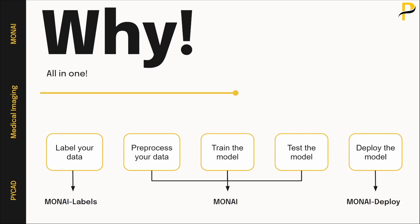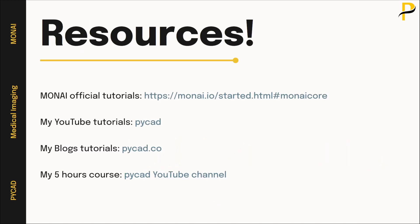Why should we use MONAI? It is all-in-one. There is a sub-module called MONAI Label that can be used for labeling your data. Then there is base MONAI, which is used for pre-processing, post-processing, training, and testing your models. There is also another sub-module called MONAI Deploy that can be used to deploy your models on the NVIDIA Clara server. So with just one library — MONAI — you can do everything from labeling to deployment.